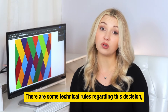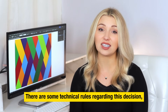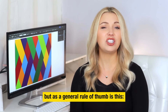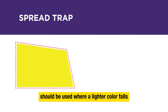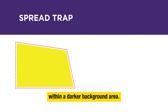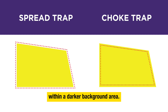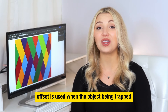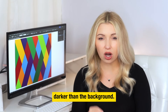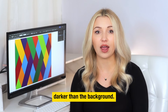When should you choose a spread or a choke? There are some technical rules regarding this decision, but as a general rule of thumb: a spread trap or positive offset should be used where a lighter color falls within a darker background area, while a choke trap or negative offset is used when the object being trapped is darker than the background.